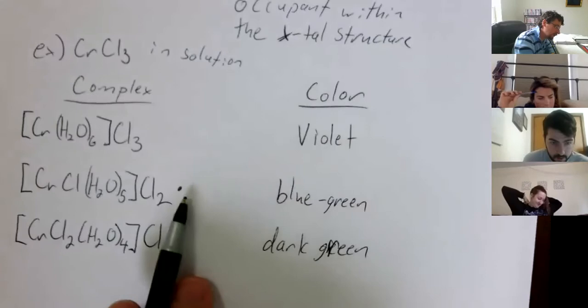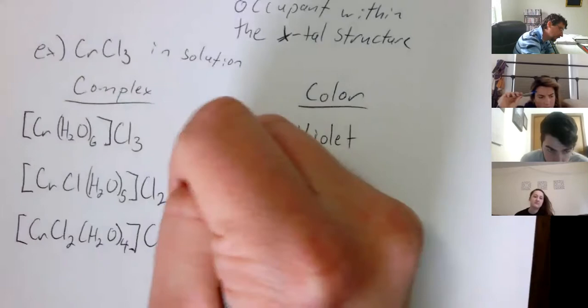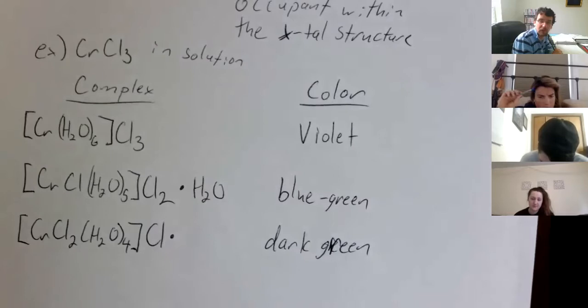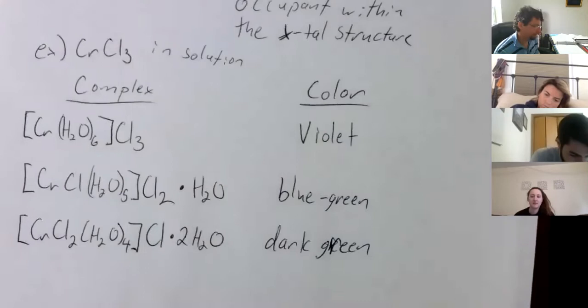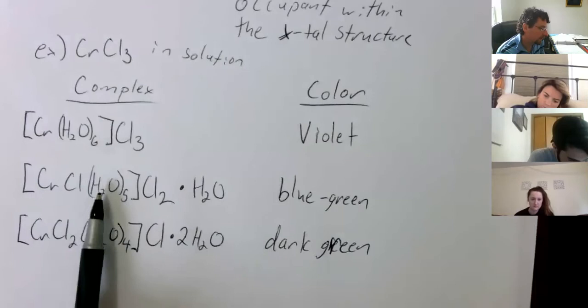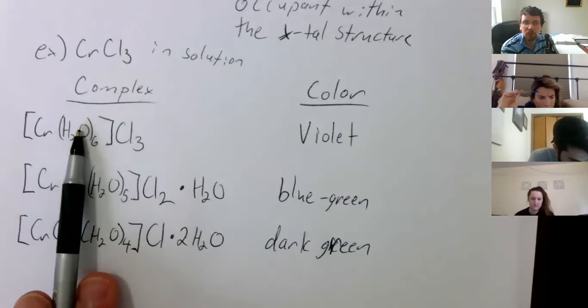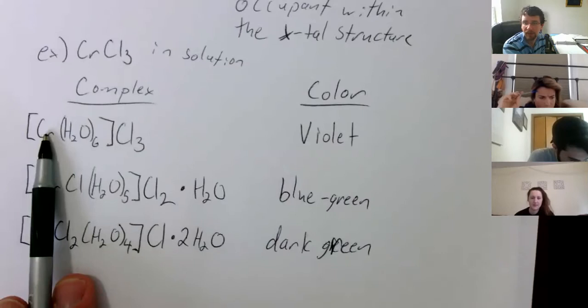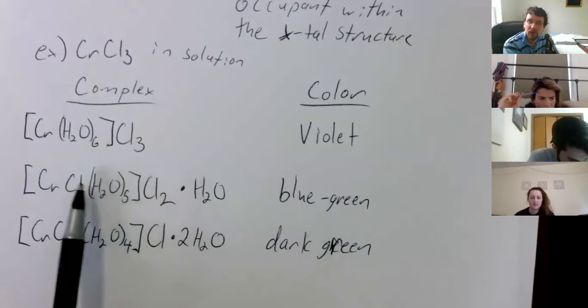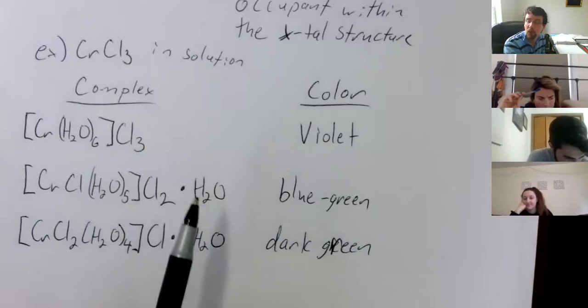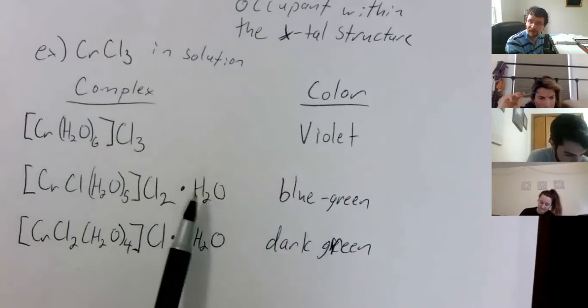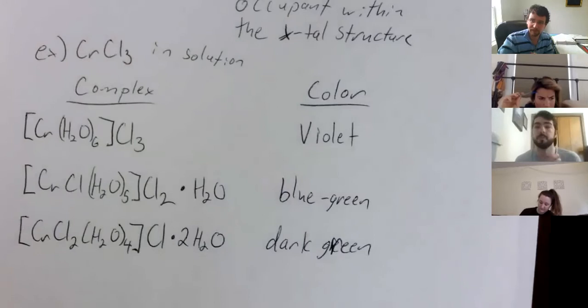We need to include the hydrate dots. How many waters should be in the middle complex — the second one? Two is correct. The waters were originally ligands attached to chromium, and the chlorines were counter ions just hanging out. Now the chlorines start to interact with chromium, so those waters have to go somewhere — they go into the crystal lattice, exchanging spots with those counter ions.